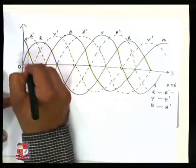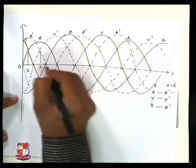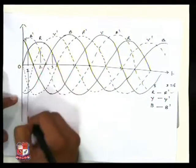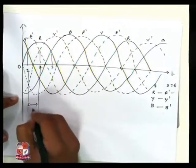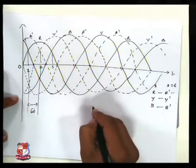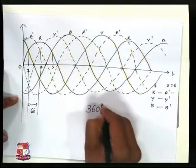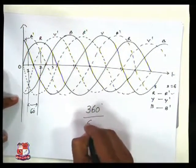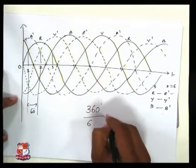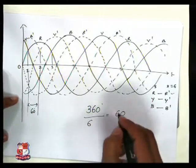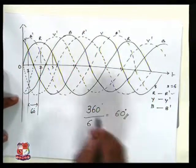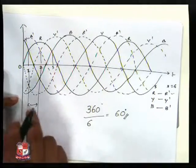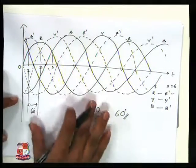So here the instant 1, 2, 3, each and every instant has 60 degrees because the 360 degree whole conduction period and you are using the sixth phase. So ultimately 60 degrees required for each and every phase to pass through the circuit.